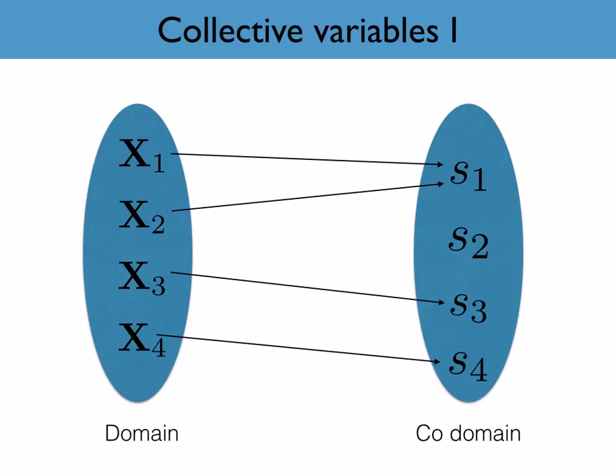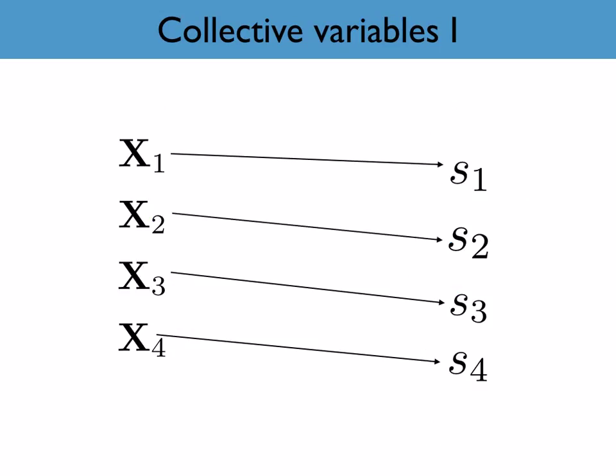In many dimensionality reductions, the solution that is proposed to this problem is to forego this attempt to map the entire domain onto a codomain. In other words, one no longer looks for a function that can take in any configuration of atoms and output a value for the collective variables.